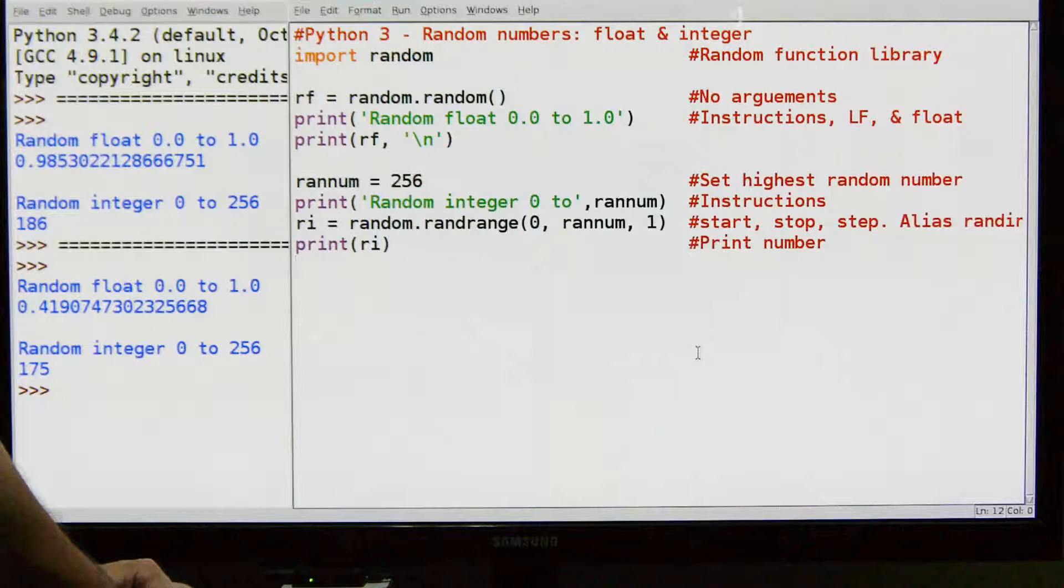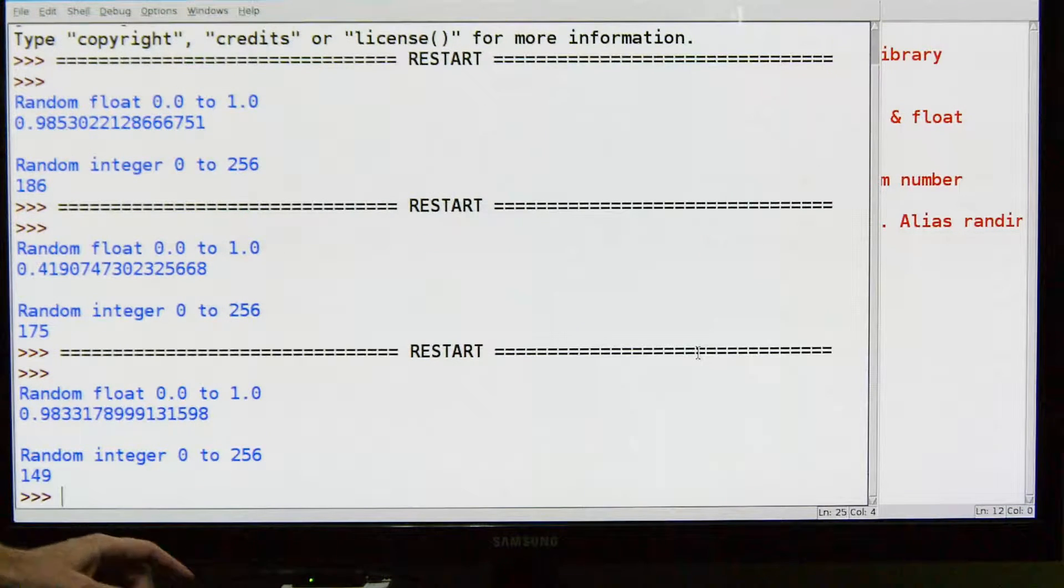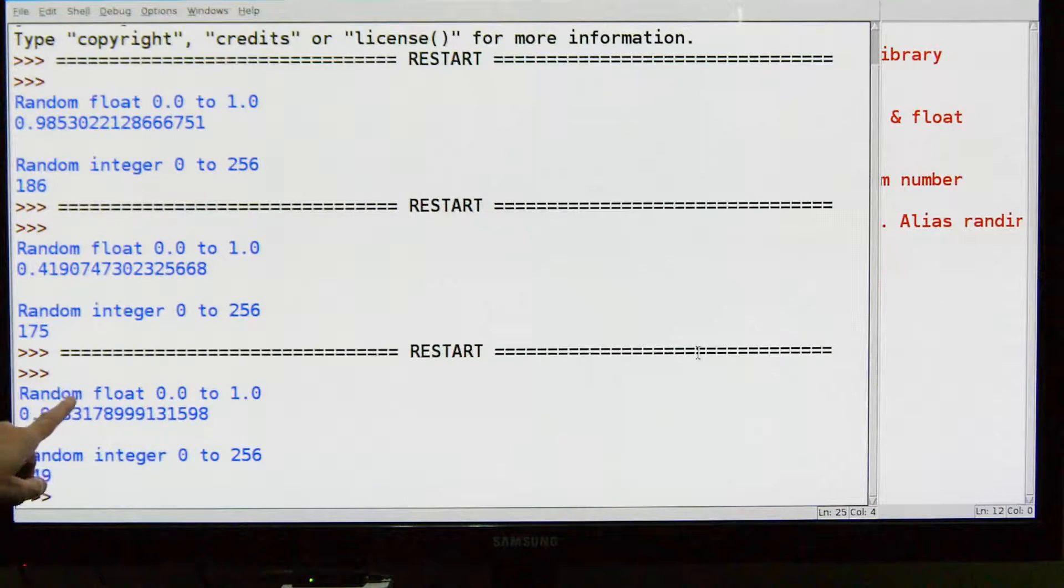I've already run it, but we'll run it again. And as you can see down here, we have random float of 0.98333 something and we have random integer 0 to 256, and we got 149.